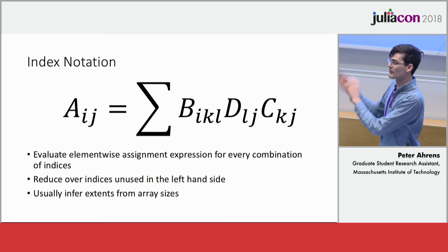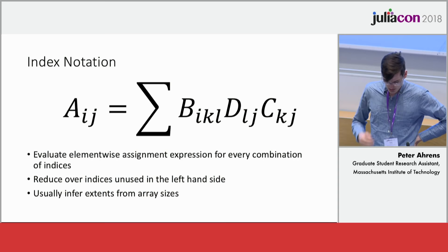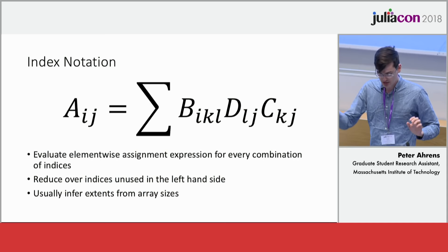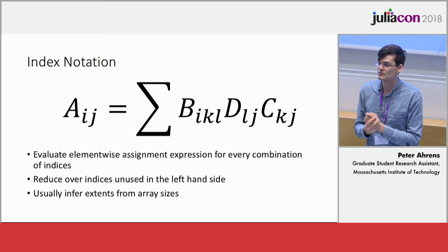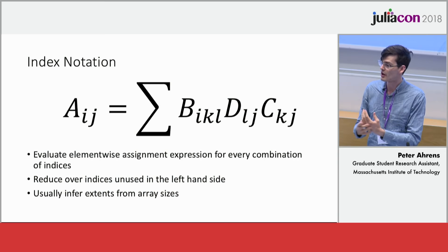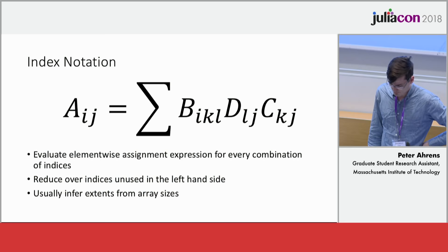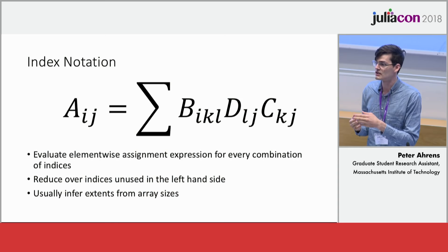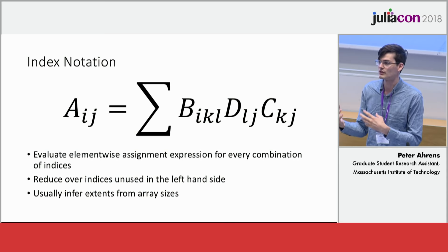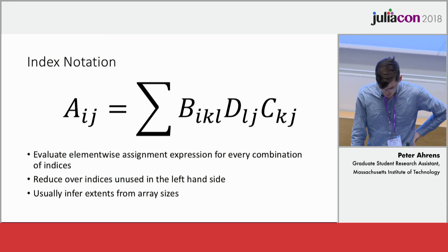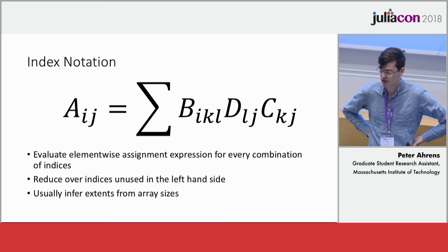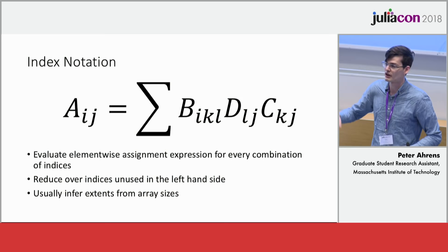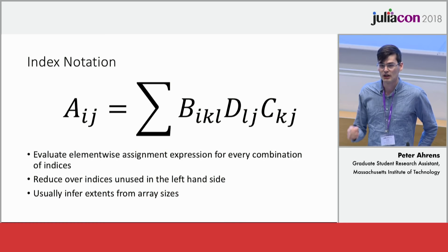What is index notation? The general rule is that we have a left-hand side and a right-hand side. The right-hand side is an element-wise expression evaluated over all combinations of the indices. We then use some reduction operator to reduce the indices that aren't used on the left-hand side. Sometimes people explain this as contracting repeated indices. One disadvantage is that you can't represent something like the sum of a vector since there's no repeated index. Another defining feature is that people usually infer the extents of the indices from the array sizes themselves.